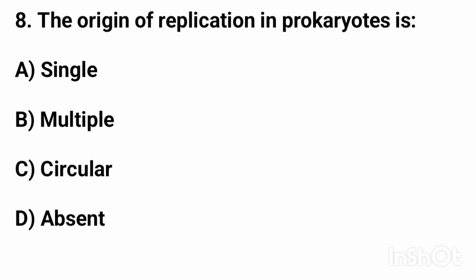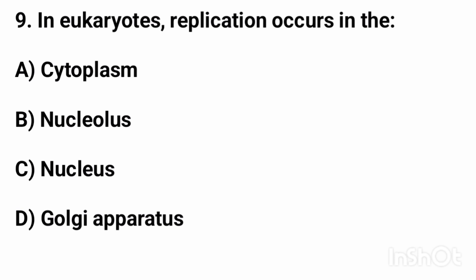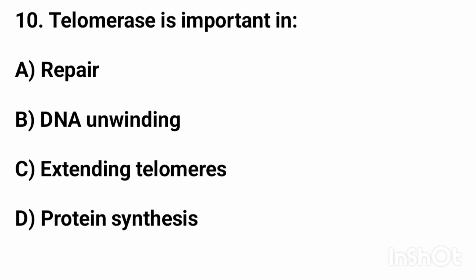Question number eight: the origin of replication in prokaryotes is? The right answer is option A, single. Question number nine: in eukaryotes, replication occurs in the? The right answer is option C, nucleus.